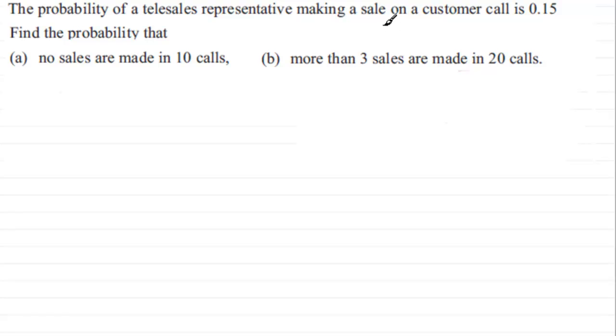And there are always two outcomes: we can either have success, that's making a sale at 0.15, or a failure, not making a sale. Probabilities remain constant and I'm assuming that they're independent of one another.